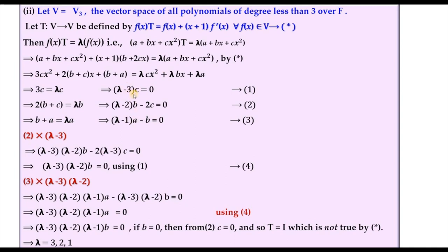To determine the characteristic roots, multiply equation 2 by (λ-3) to get (λ-3)(λ-2)b = 0. Then multiply equation 3 by (λ-3)(λ-2), and using the result that (λ-3)(λ-2)b = 0, we are left with (λ-3)(λ-2)(λ-1)a = 0.